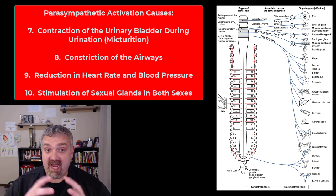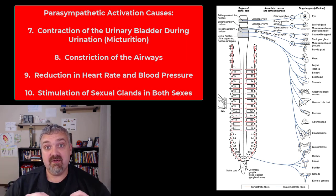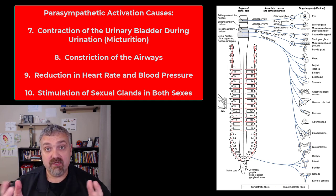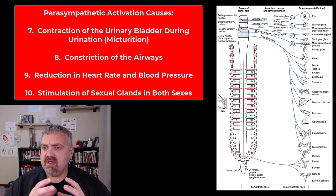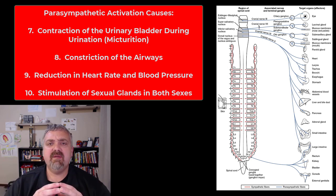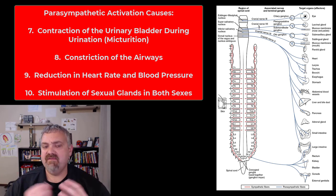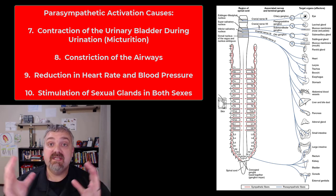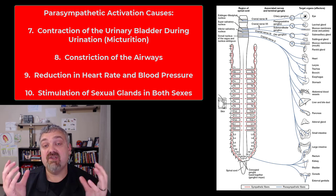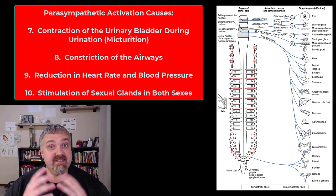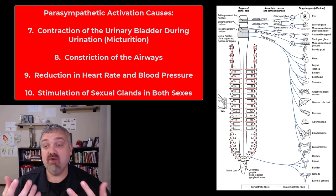Number seven would be contraction of the urinary bladder so that you can urinate — you do have to relax in order to urinate. Number eight, we're going to see constriction of the respiratory passageways because you don't need to move as much air since you're resting, not fighting, not fleeing. And number nine, we're going to see a reduction in heart rate, force of contraction, and blood pressure, because again, you're relaxing and recuperating.